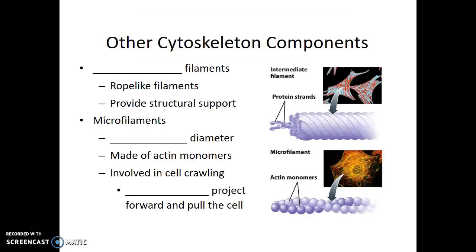The next two types of cytoskeletal elements are the intermediate filaments and the microfilaments. As their name suggests, the intermediate filaments are intermediate in thickness — thinner than the microtubules but thicker than the microfilaments — and they help provide structural support within the cell. The microfilaments have the thinnest diameter of all the cytoskeletal elements. They are made out of the protein actin, and they are thin threads that intersperse throughout the plasma membrane of the cell.